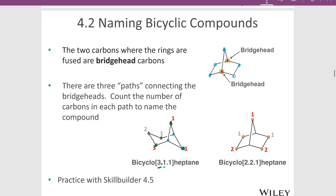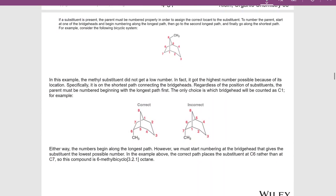We start with the largest path number first, then a dot, then the next shortest path, then a dot, then the third shortest path. We close that in brackets and add the total number of carbons in the molecule as the parent name. This is unusual because we're not just finding the longest carbon chain — we include the total number of carbons. The molecule shown here has two two-carbon paths and a one-carbon path, giving us bicyclo[2.2.1]heptane.